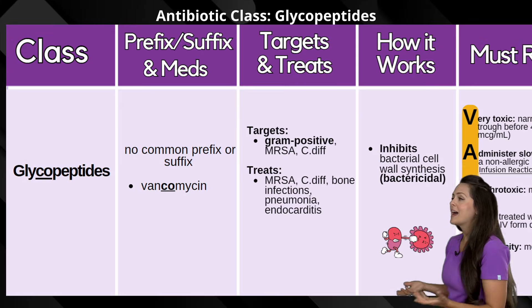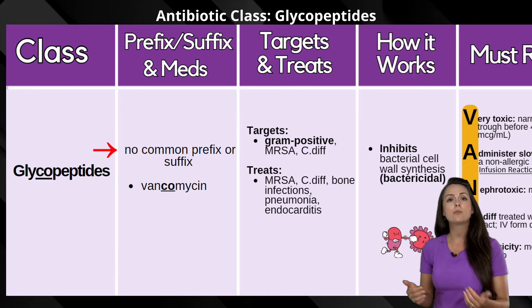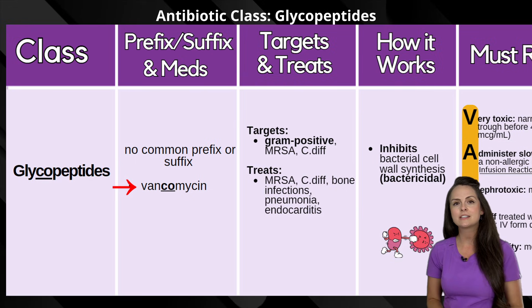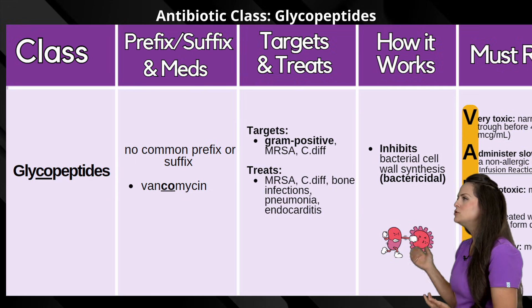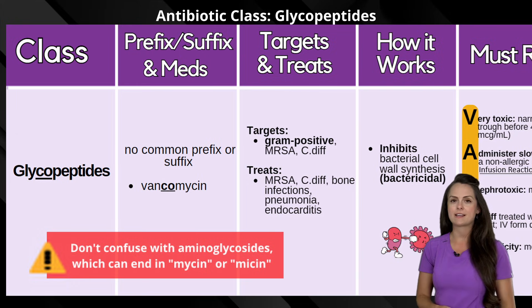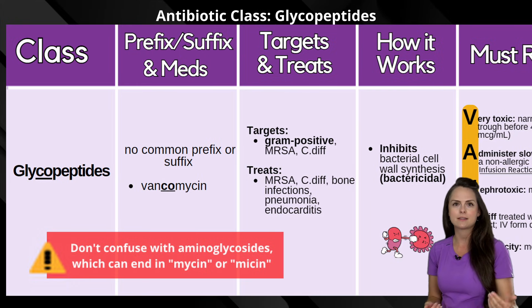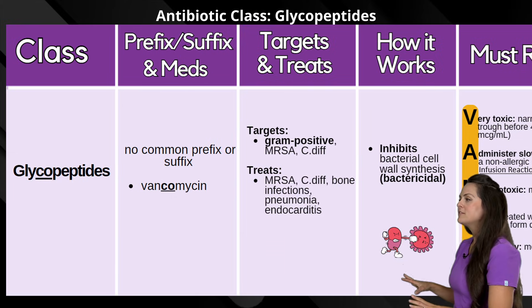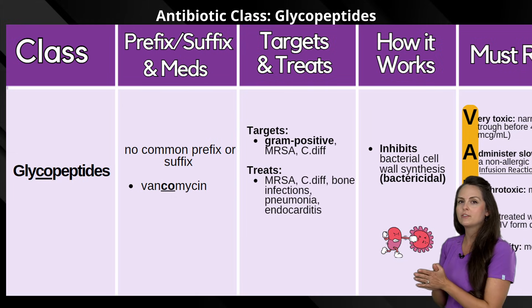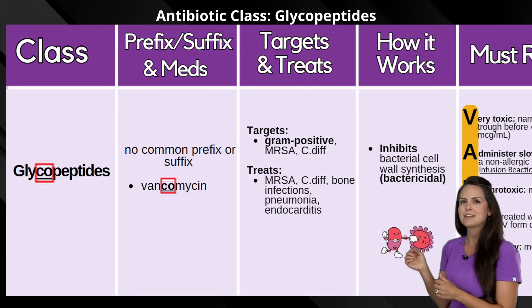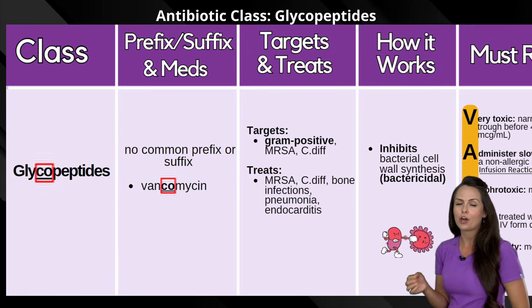The glycopeptide class actually doesn't have a common prefix or suffix, and a popular medication in this class is vancomycin. Whenever you look at this medication, don't get confused and think it's an aminoglycoside — remember that class tends to end in 'mycin.' Look more at this name: notice that 'co' in there. Where else have you seen 'co'? In its main class name, glyco. So this is a glycopeptide.